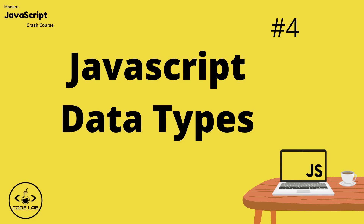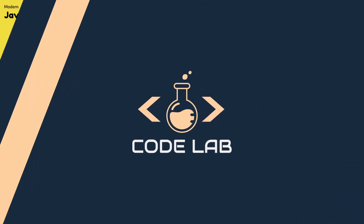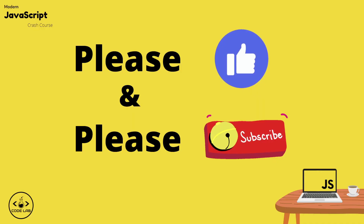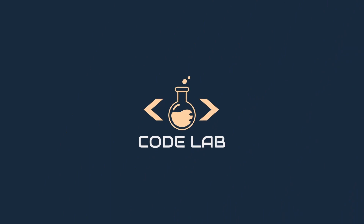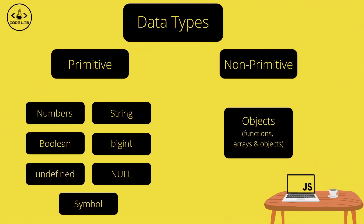Welcome back to the modern JavaScript crash course. In this video we'll be learning about all the different data types in JavaScript. This video won't be the most exciting, however it is important that we cover this topic. Data types are a very important element in programming because a value in JavaScript is always of a certain data type, and to operate on variables JavaScript has to know something about the type.